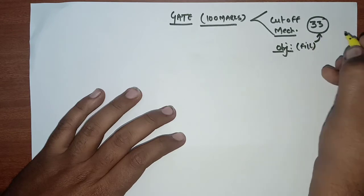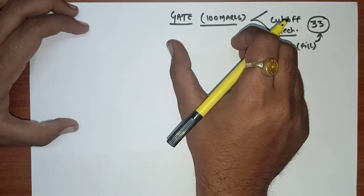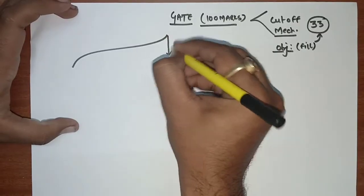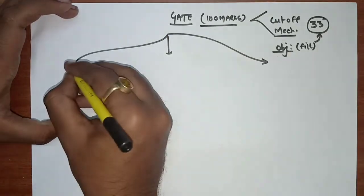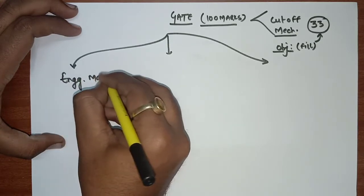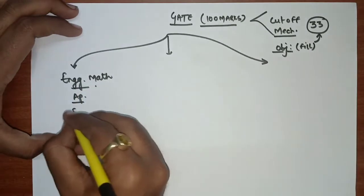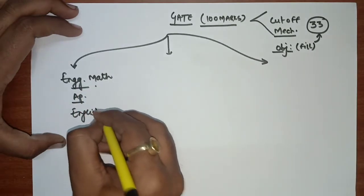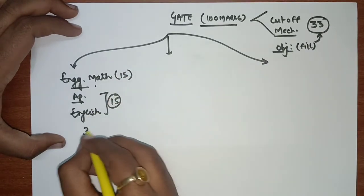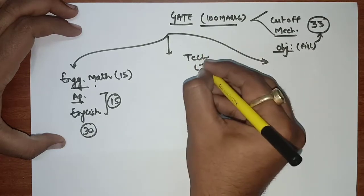We are talking about which subjects to focus on so that our GATE exam will be cracked. We discuss this in three parts: Engineering Mathematics, Aptitude, and the technical part. Engineering Mathematics is 15 marks, Aptitude is 15 marks — so these two together are 30 marks. The rest, the technical part, is 70 marks.